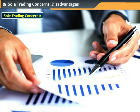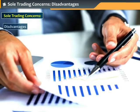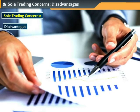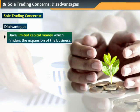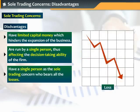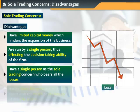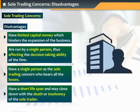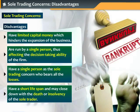Despite having many advantages, sole trading concerns do face some disadvantages. The capital money of sole trading concerns is limited, which hinders the expansion of the business. Since sole trading concerns are run by a single person, the managerial ability is limited, which in turn affects the decision-taking ability of the firm. All losses have to be borne by a single person only. The life of the sole trading concern might be short — it may close down with the death or insolvency of the sole trader.